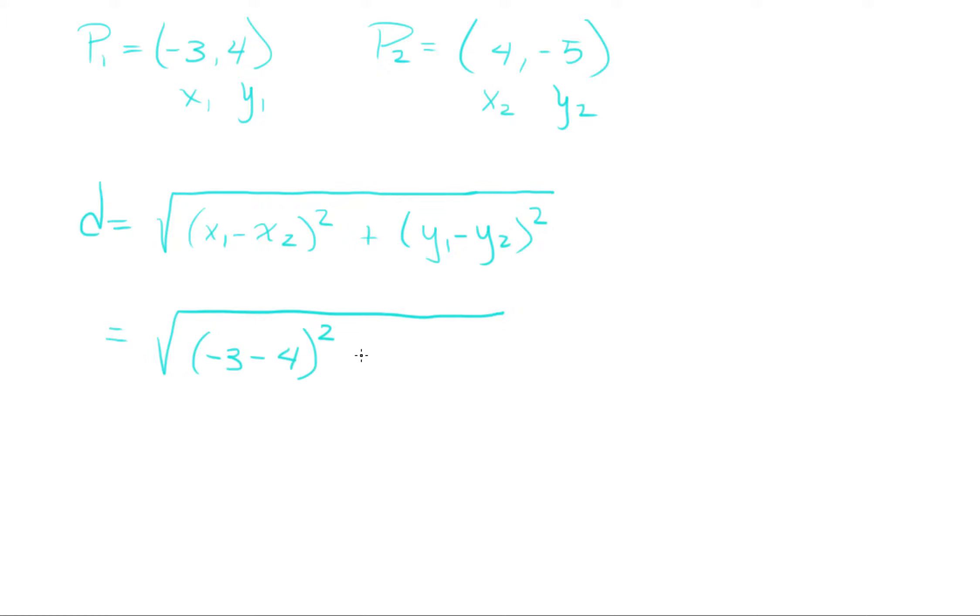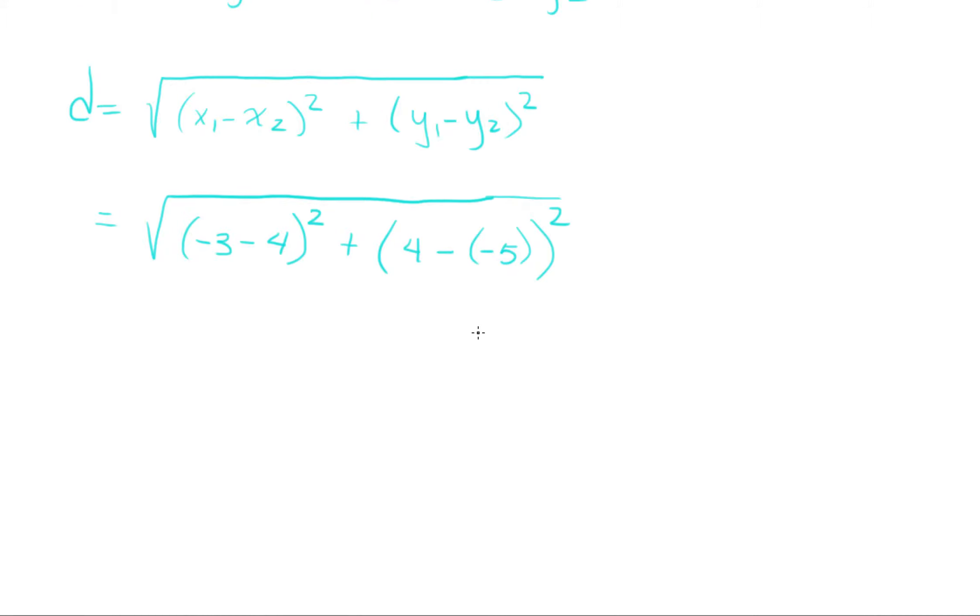Plus, y1 is 4 minus y2 is −5. Notice there's a minus in front, so I'm going to put another parenthesis and then square. This parenthesis is for the −5, this one is for the formula.